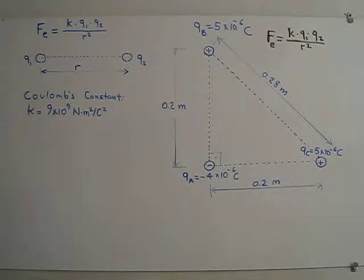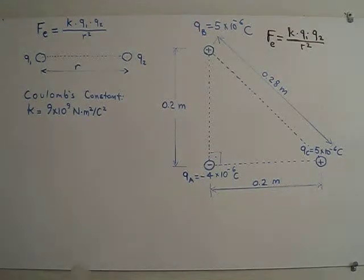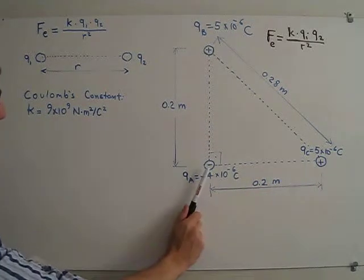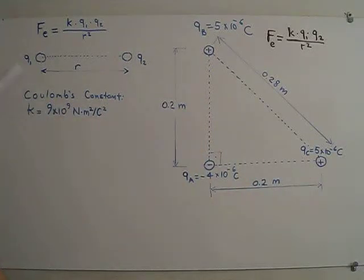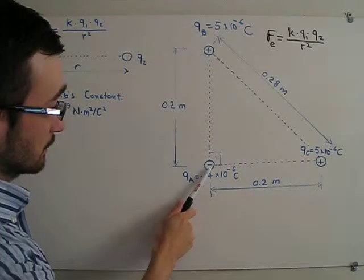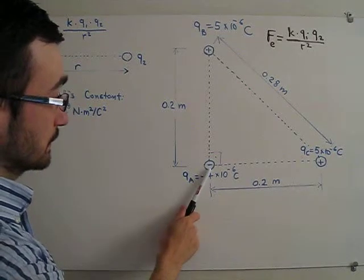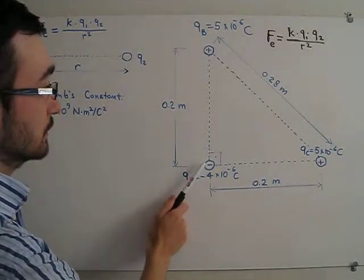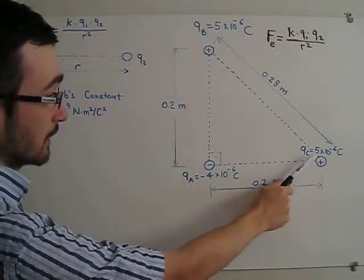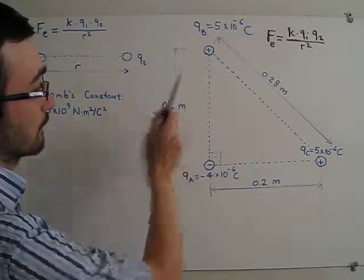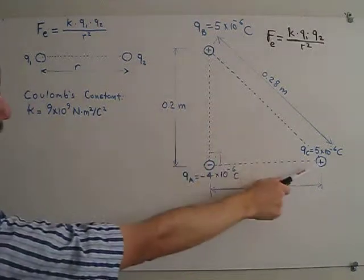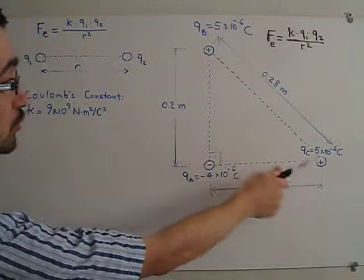Let us do another example about calculating electric forces. We now have three charges at the corners of a right angle triangle. This angle is 90 degrees, this distance is 0.2 meters and so is this distance. These angles will be 45 and 45 degrees, and because this is a right angle triangle we can calculate this distance using the Pythagorean theorem as 0.28 meters.